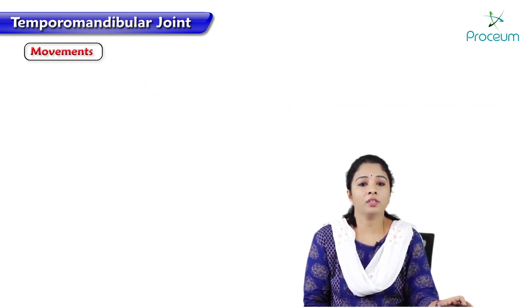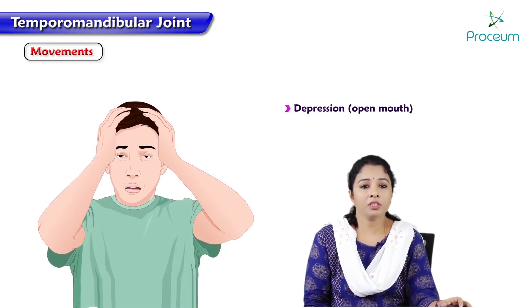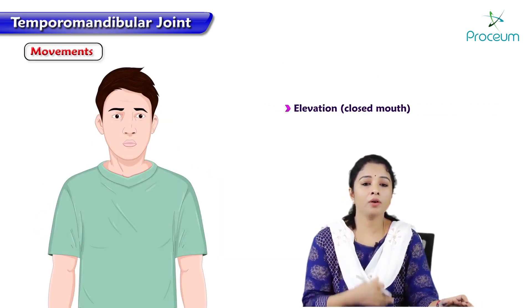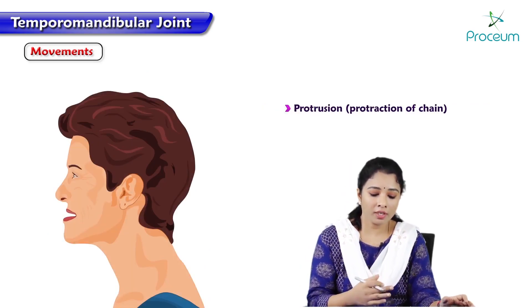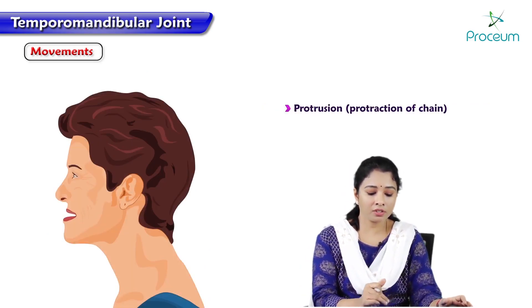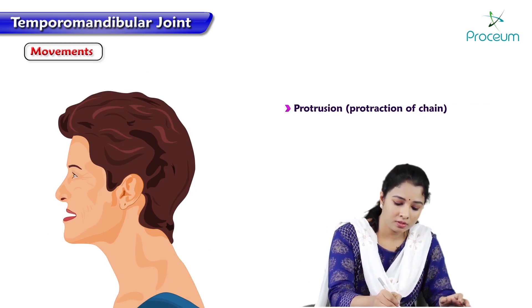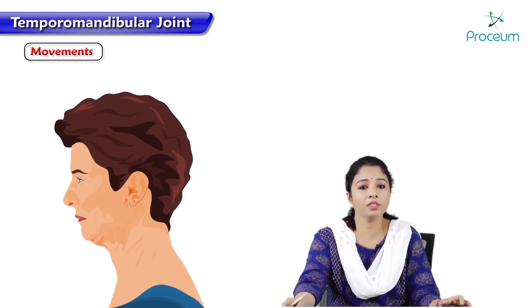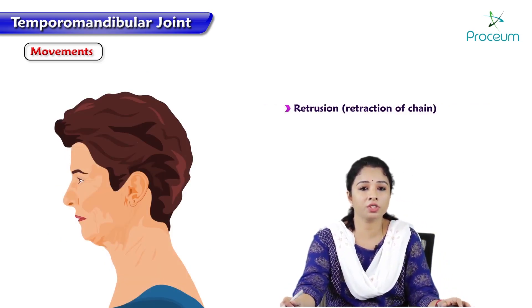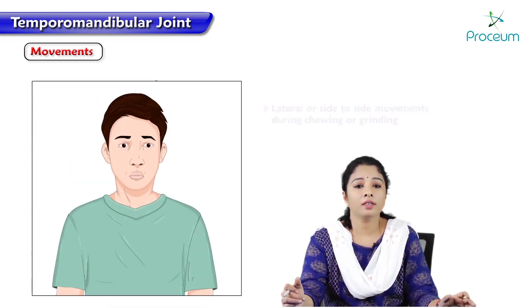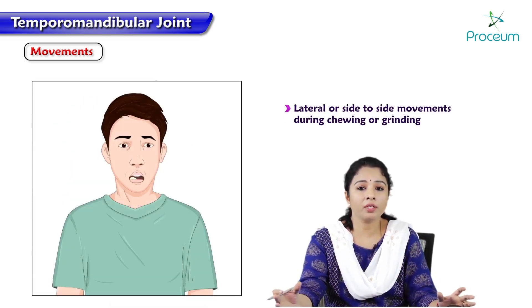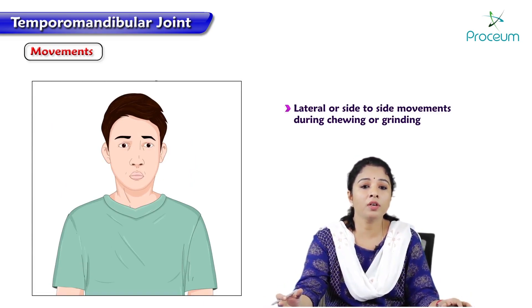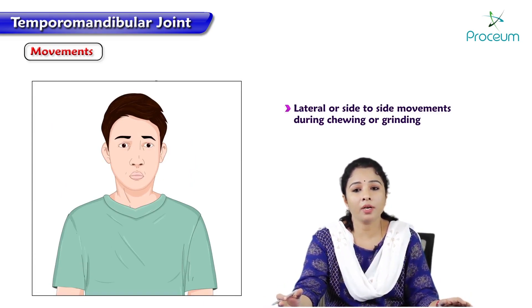The movements of the temporomandibular joint include: depression, which is opening of the mouth; elevation, which is closing the mouth; protrusion, where the mandible moves forward as seen in this image; retrusion or retraction of the jaw; and lateral side-to-side movements during chewing or grinding.